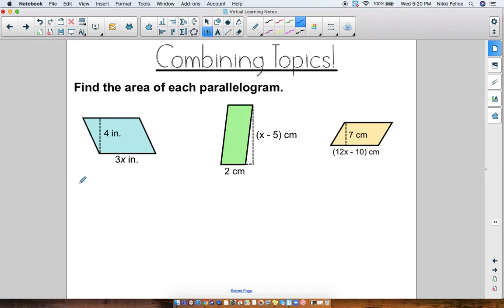Hopefully you did this now. Same thing. Even though there's a variable, you're going to do the same thing. Area is base times height. So in this problem, my base is 3x inches, and the height, I can see, is 4 inches. So I'm going to do 3x times 4. What's 3x times 4? It's 12x. So my area is 12x inches squared.